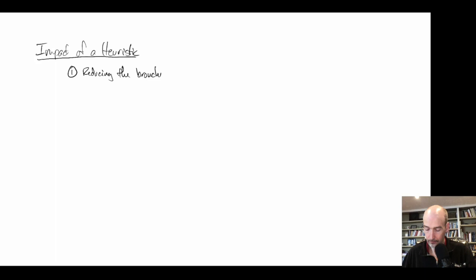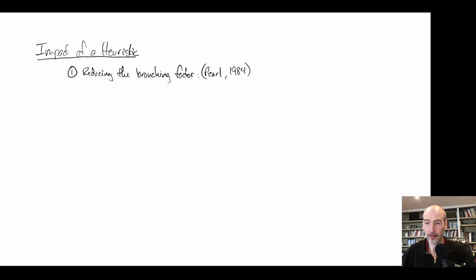If you look at a book by Judah Pearl from 1984, this is the first textbook on heuristic search. Pearl later went on to win a Turing Award for his work on Bayesian reasoning, probabilistic reasoning, and causality. He had some very early work on heuristics, and a portion of this book was trying to analyze what the impact of a heuristic was.